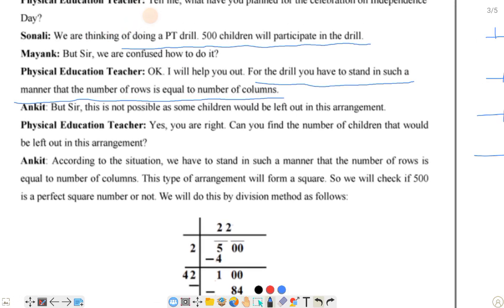Ankit says, but sir, this is not possible as some children would be left out in this arrangement. Teacher: Yes, you are right. Can you find the number of children that would be left out in this arrangement?